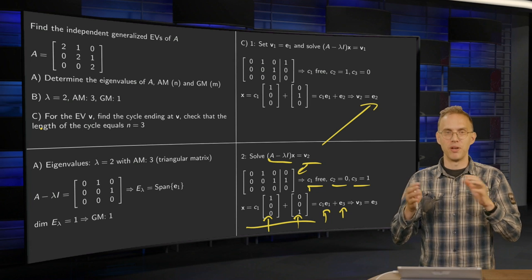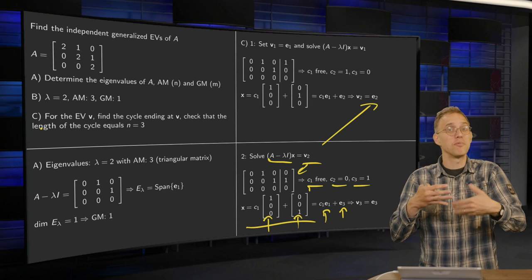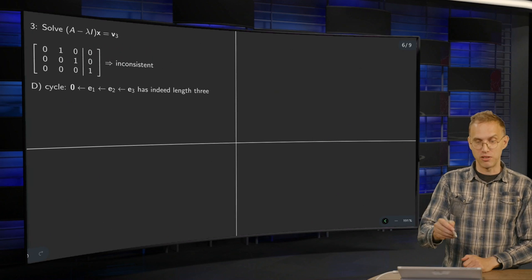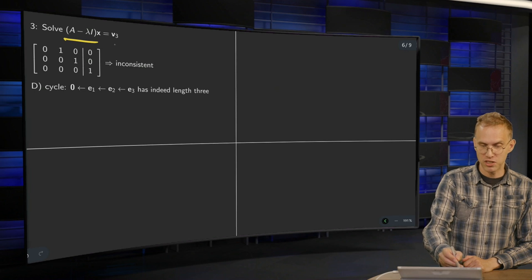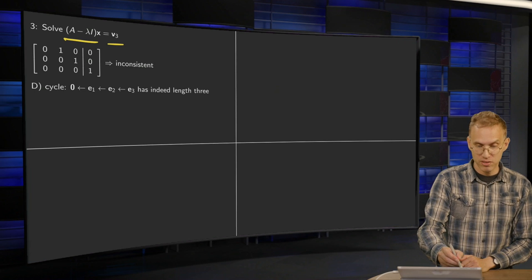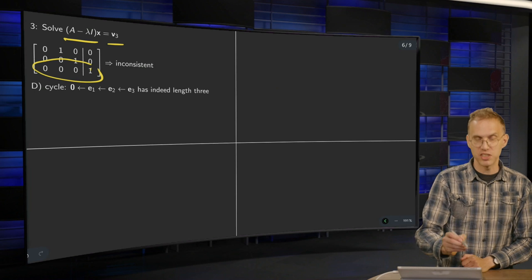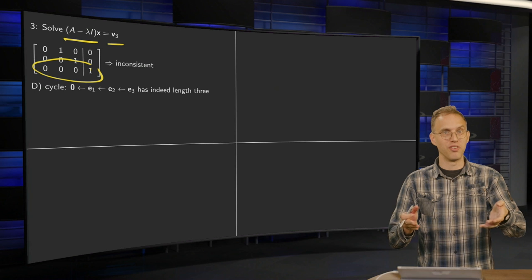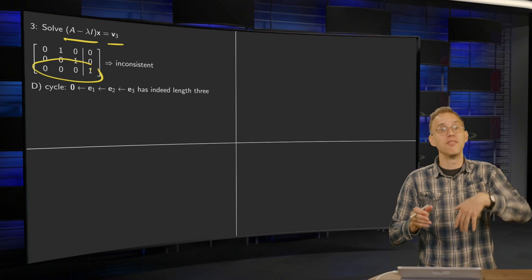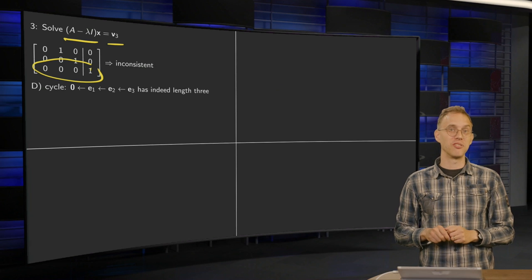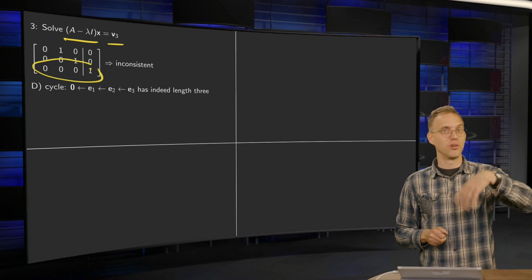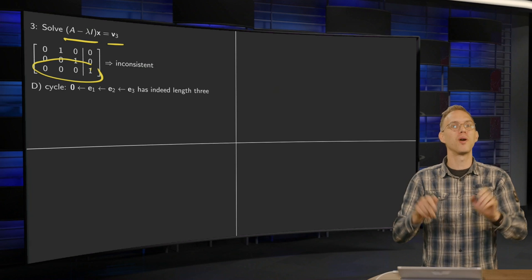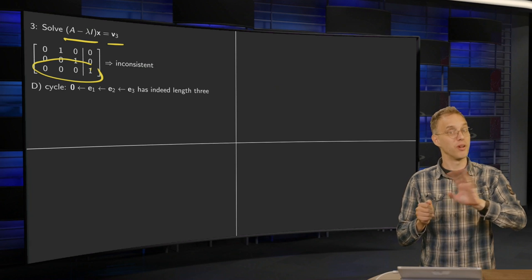What happens if we are doing silly and try to go on? What happens if we will try to find more? Now, let's try to solve A minus lambda I times x equals V3. So we now have to augment with V3. And we see we get something which is inconsistent. Hey, so even if you are doing something silly, you were already done. Even if you try to go on, you see that you get an inconsistent system. And that is, of course, a signal that you were already done in the previous step. So no problem if you are doing something silly. You will notice it anyway.